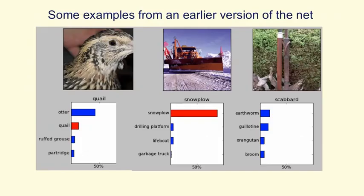Here are some examples of the kinds of images the network has to recognise from the test set it's never seen before. Below the examples, I'm showing what the neural net thought the right answer was — the length of the horizontal bar indicates confidence, and the correct answer is in red. In the middle, it correctly identified a snowplough, and its other choices were also fairly sensible — it looks a little like a drilling platform, and its third choice, a lifeboat, actually looks very like a lifeboat. You can see the flag on the front of the boat, the bridge, and the high surf in the background. On the left, it gets it wrong, possibly because the beak of the bird is missing and the feathers look very like the wet fur of an otter. But it gets it in its top five and does better than me.